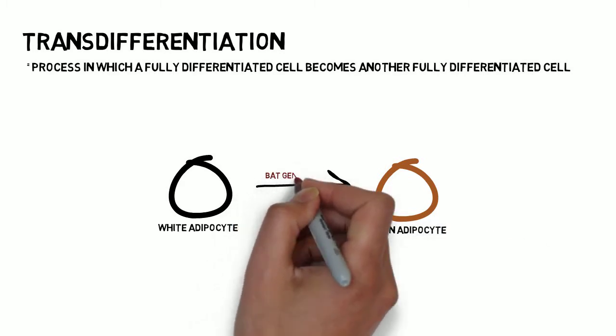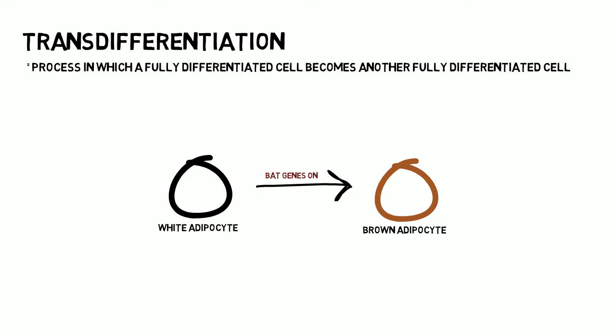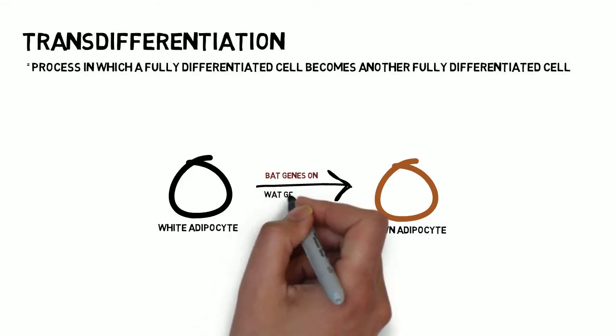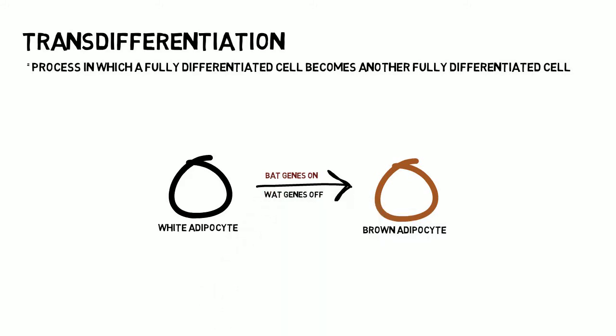This generally includes the switching on of genes that are specific for the new cell type and the switching off of genes that were unique to the old. This has been shown to occur in adipocytes, aka fat cells, as they swap from white to brown.